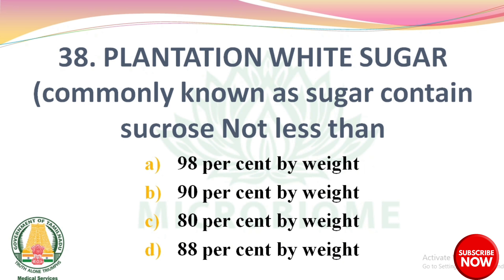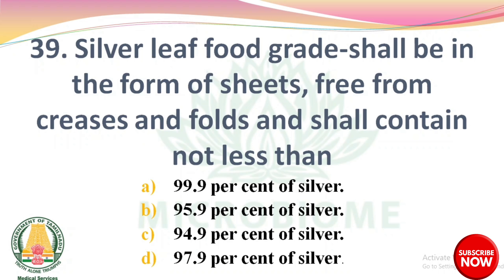Question 36: Plantation white sugar, commonly known as sugar, contains sucrose not less than — options: 98% by weight, 90% by weight, 80% by weight, 88% by weight. The right answer: option A, 98% by weight. Question 37: Silver leaf (vark) shall be in the form of sheets free from creases and folds and shall not contain less than — options: 99.9% of silver, 95.9% of silver, 94.9% of silver, 97.9% of silver. The right answer: option A, 99.9% of silver.